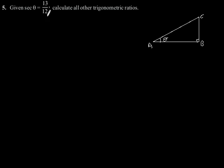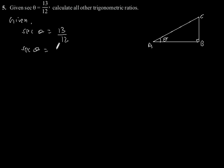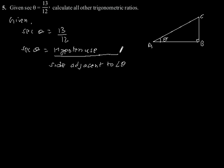Exercise 8.1, question number 5: given sec θ is equal to 13/12, calculate all other trigonometric ratios. To solve this, let us consider a right angle triangle ABC which is right-angled at point B. As given, sec θ = 13/12, and sec θ is also equal to hypotenuse divided by side adjacent to angle θ.